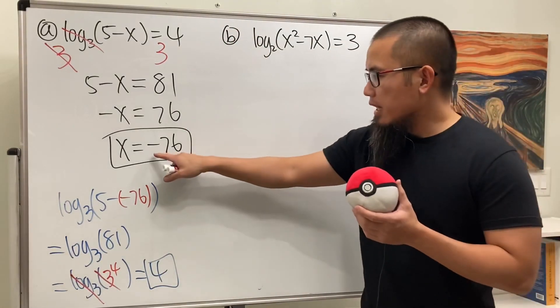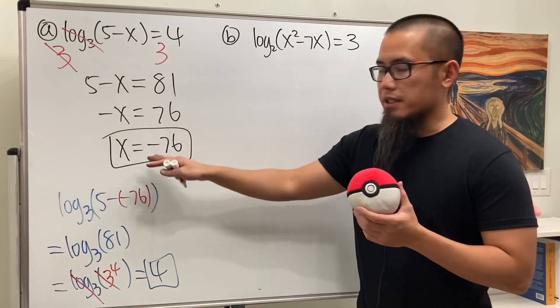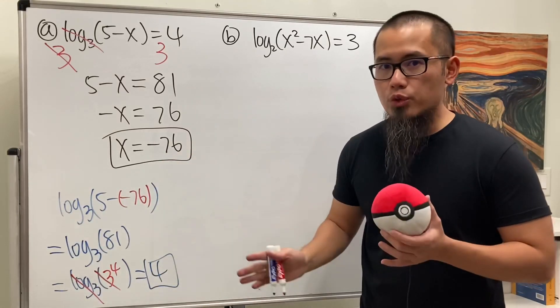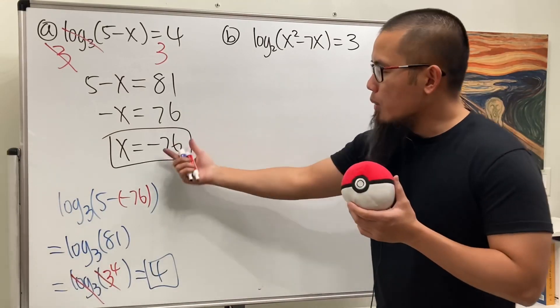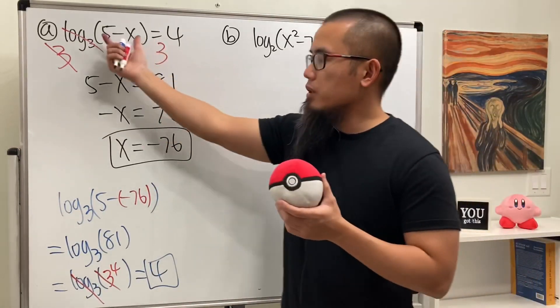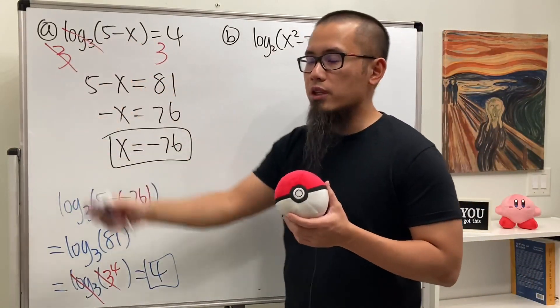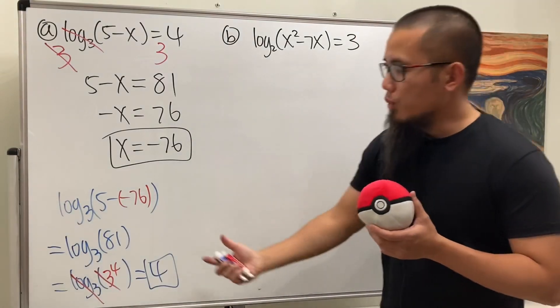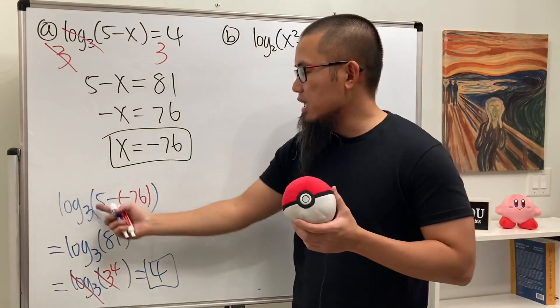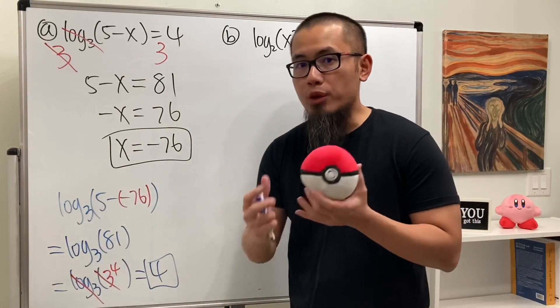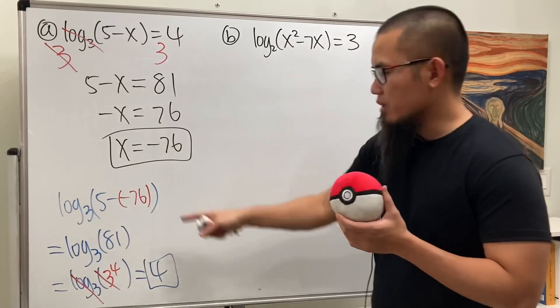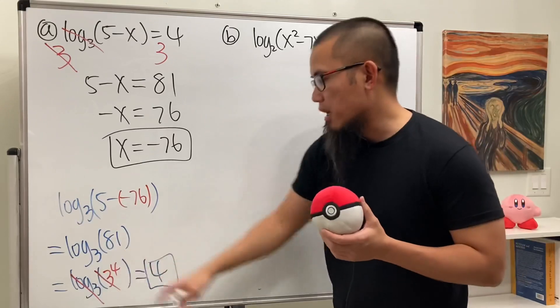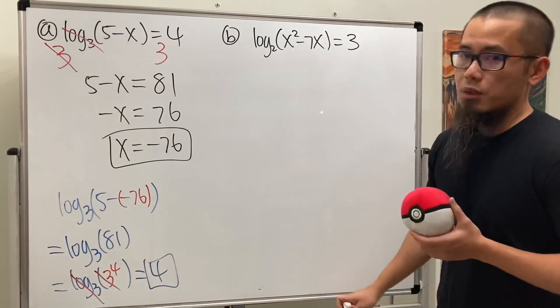So if you get a negative number for x, don't worry too much. You always just plug it into the original equation to make sure we do not have a negative inside the logarithm. Here the inside is actually a positive 81, so that was good.